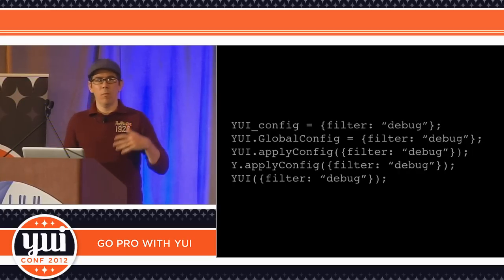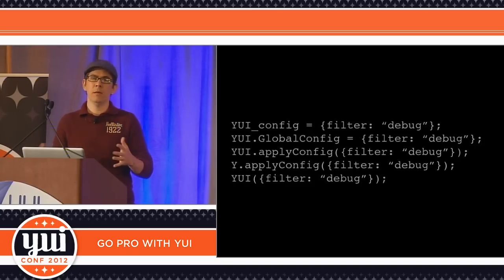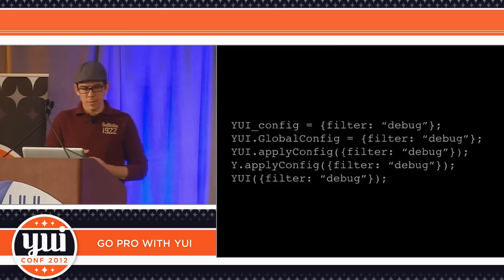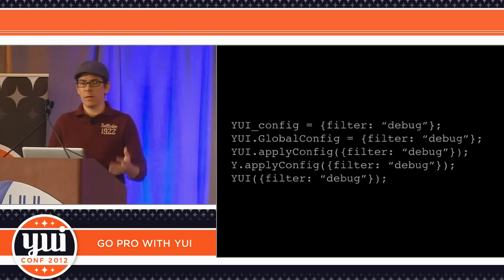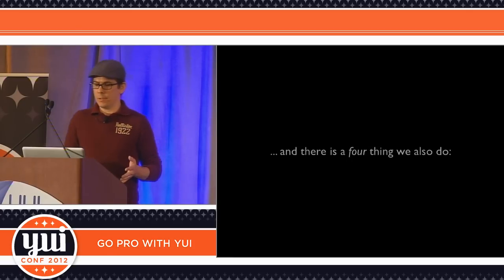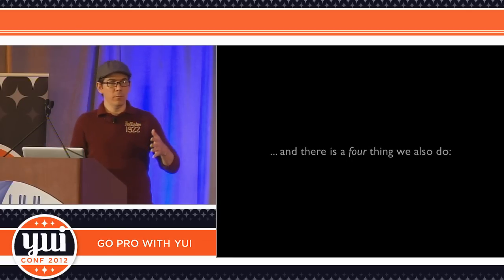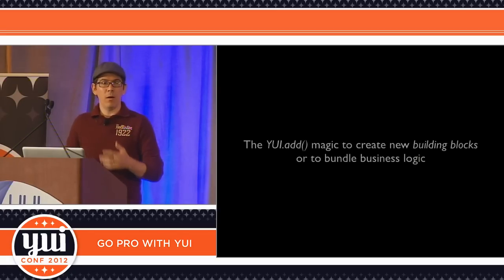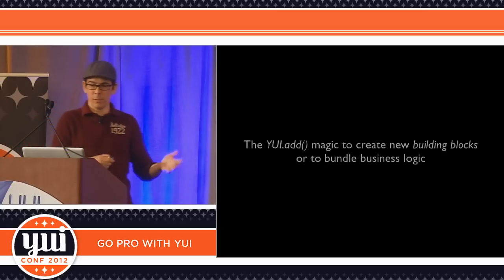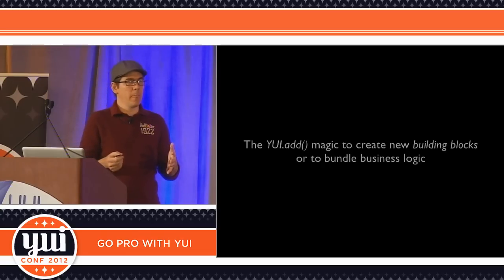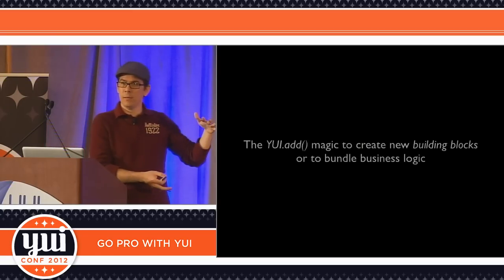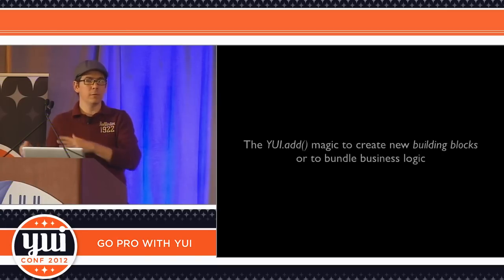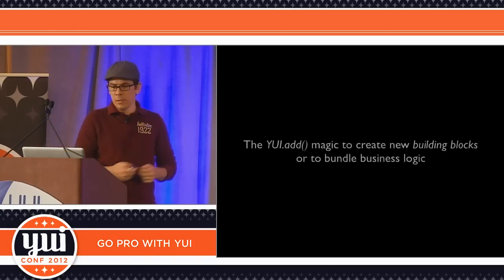Probably the most commonly used configuration today is just a filter to tweak the library and say, 'I want to get the debug mode engine.' But there are many other configurations you'll learn when you start using the library. There is a fourth thing we also do: creating new building blocks. You use the YUI add statement to create your own building blocks and bundle business logic specific to your product. We recommend not using the use statement for that, but instead creating a YUI module that holds that logic, because it's easier to test.